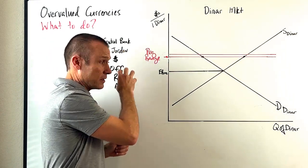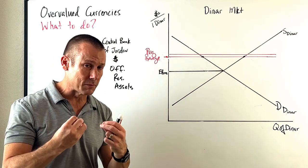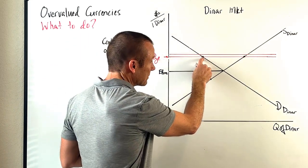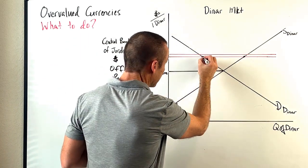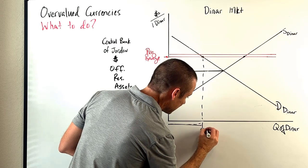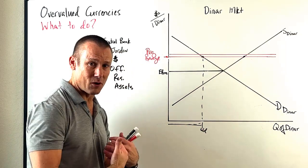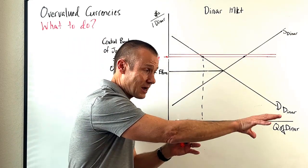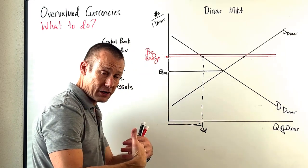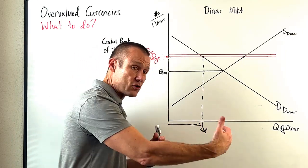Here's what's really going on — and this is a bit involved, so pay attention. At that official exchange rate, we're intersecting the demand curve at a certain point. This is the quantity demanded for the dinar, which represents credit for Jordan — people outside of Jordan who want the dinar to either buy Jordanian goods and services, do tourism in Jordan, or invest there.